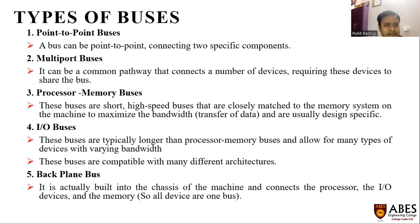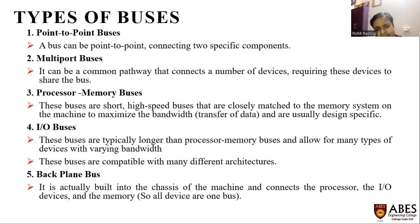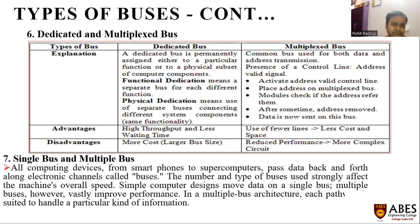There are various types of buses: point-to-point buses, multiport buses, processor-memory buses, IO buses, and backplane buses. As per the connection and architecture, there are two types of buses: dedicated buses and multiplex buses.